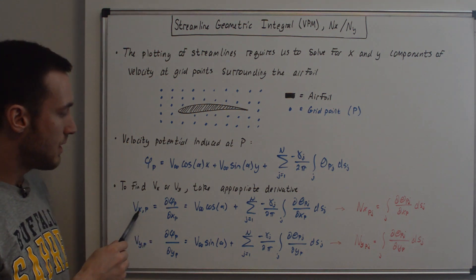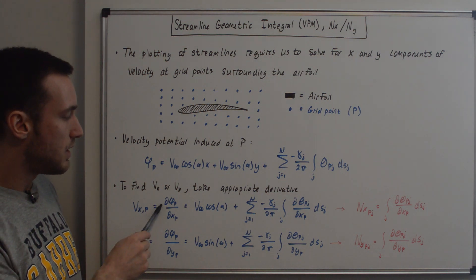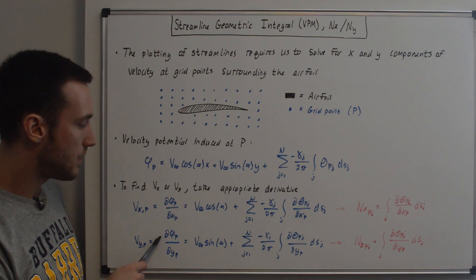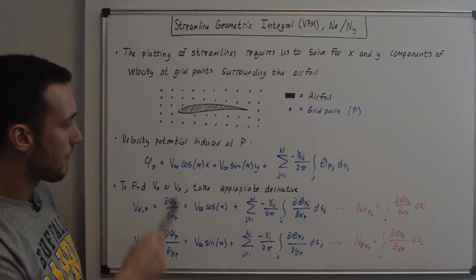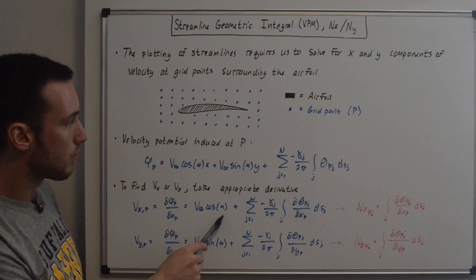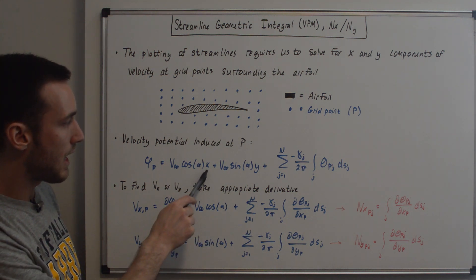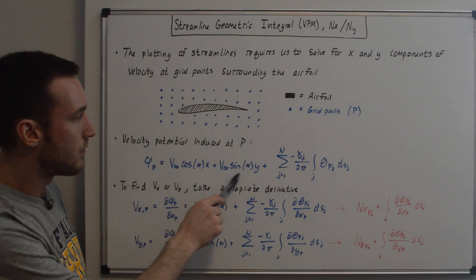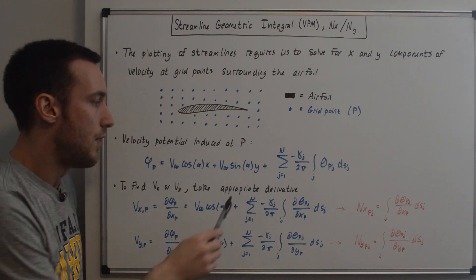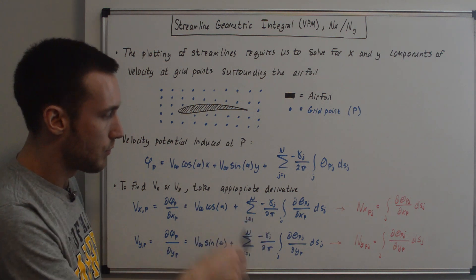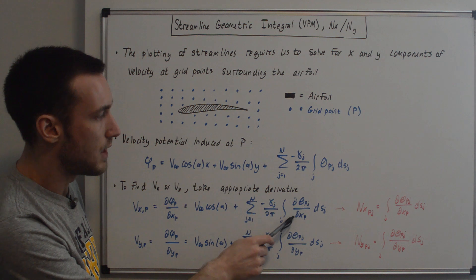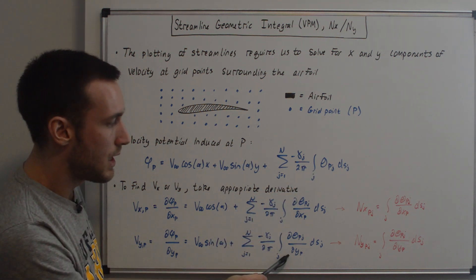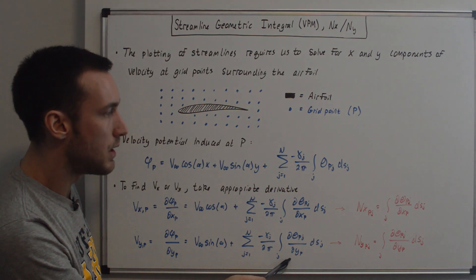The velocity in the x direction at point P is d(phi_P)/dx_P, and the velocity in the y direction at point P is d(phi_P)/dy_P. From the uniform flow term, taking the derivative with respect to x gives V_infinity cosine alpha, and with respect to y gives V_infinity sine alpha. For the summation integral terms we take the derivative, giving d(theta_Pj)/dx_P and d(theta_Pj)/dy_P.